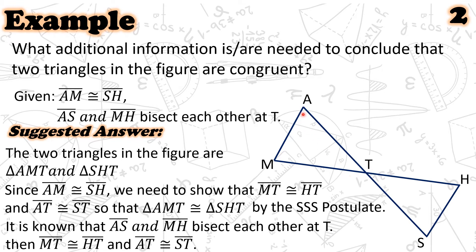It is known that AS and MH bisect each other at point T. Therefore, by the definition of segment bisector, MT is congruent to HT and AT is congruent to ST. Hence, we have the three sides of triangle AMT congruent to the corresponding three sides of triangle SHT. Therefore, the two triangles are congruent.